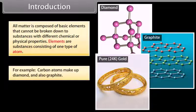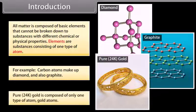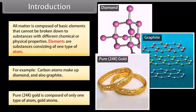For example, carbon atoms make up diamond and also graphite. Pure 24 karat gold is composed of only one type of atom, gold atoms.